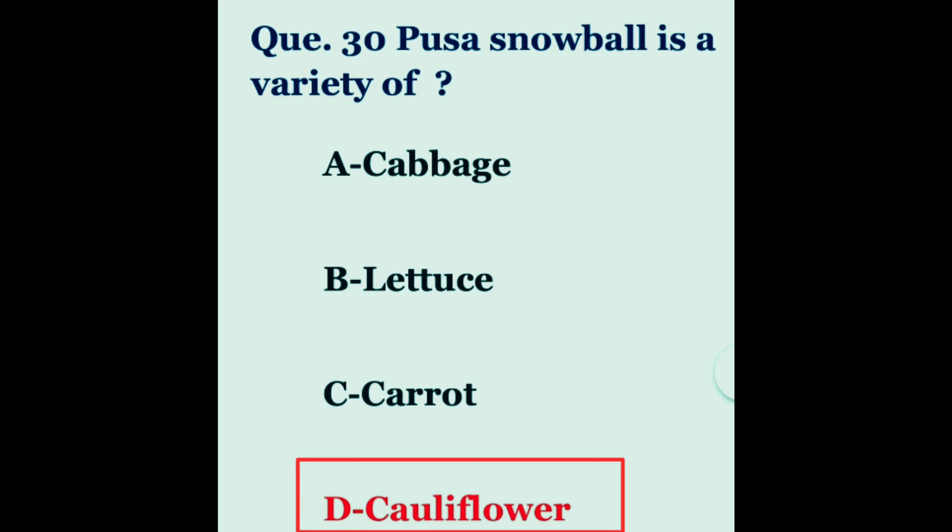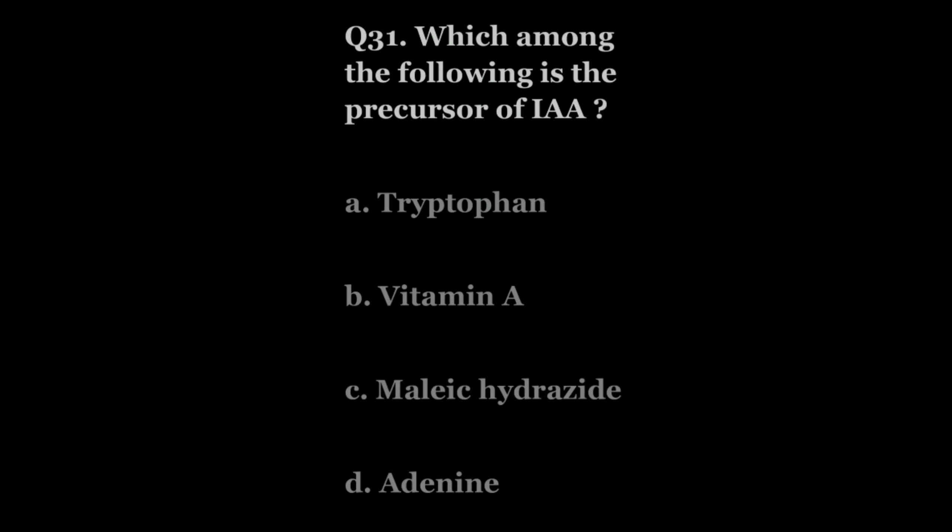Question 31. Which among the following is the precursor of IAA? The options are tryptophan, vitamin A, maleic hydrazide, or adenine. The correct answer is tryptophan.